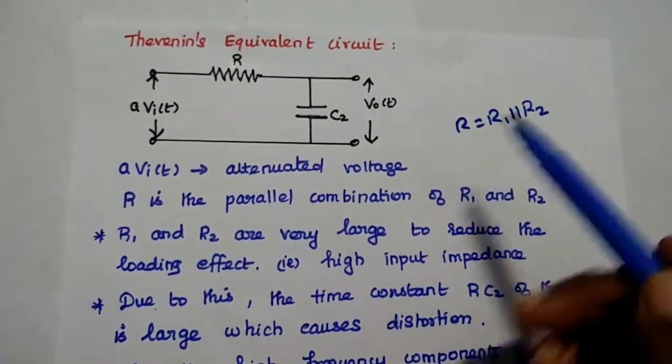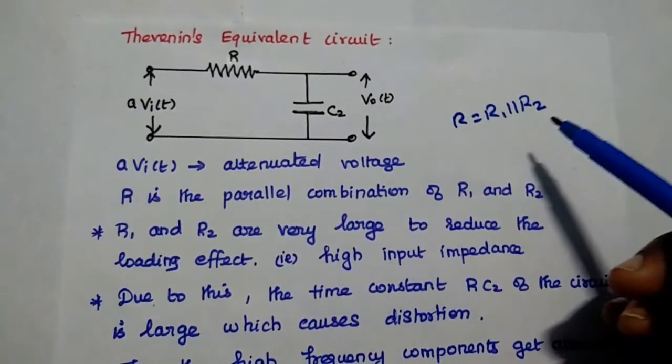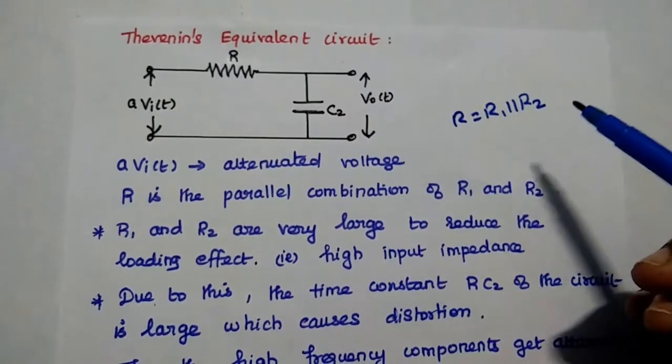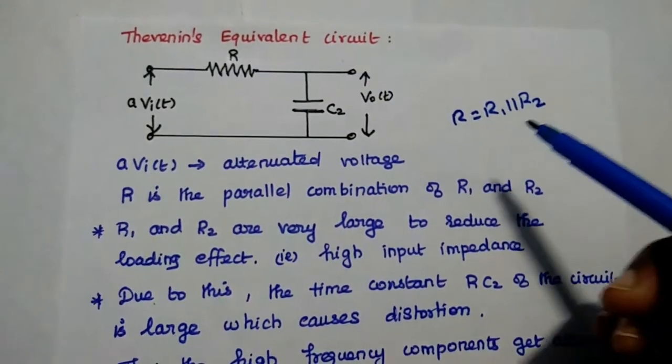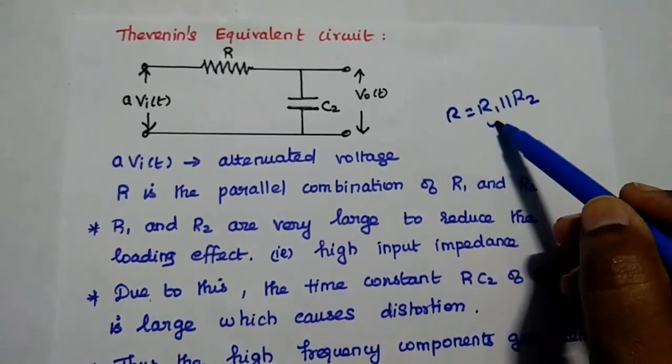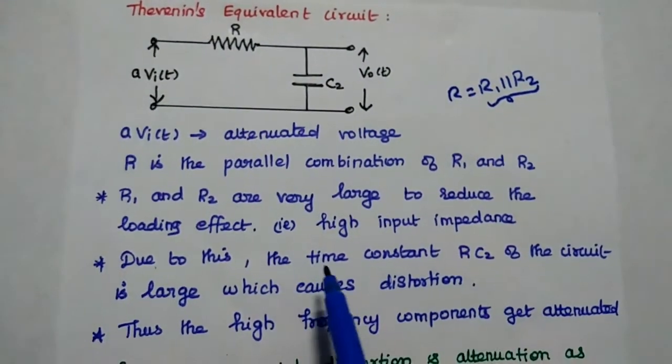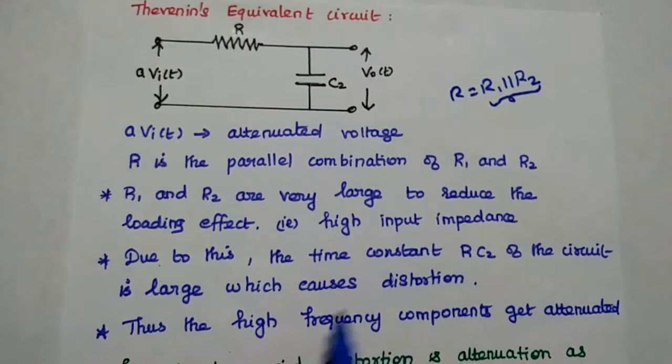As we all know, this R1 and R2 values are very high to provide a high input impedance for the attenuator. It is mainly used to reduce the loading effect. Since these two values are high, we can get the time constant R into C2 is also high.